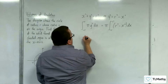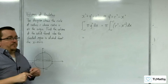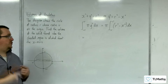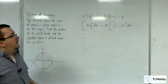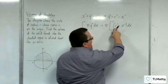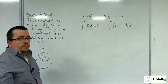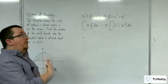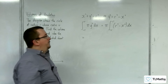Now, r and r squared are just values — they're numbers, not variables. So when we integrate, r squared behaves like a constant. Just as 2 integrates to 2x, r squared integrates to r squared x.